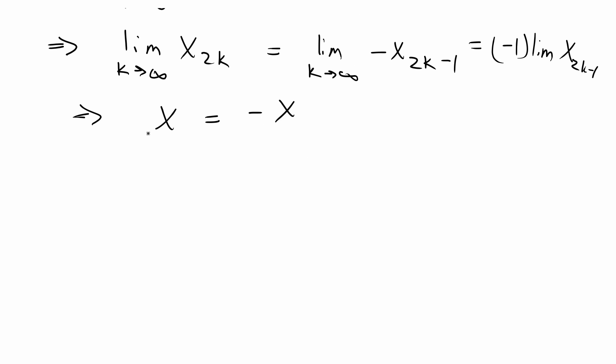Now we have X is equal to negative X. If we bring the negative X to the same side, we have 2X or X plus X, which is equal to 2X, which is equal to 0. If we divide by 2 on both sides, we get 0 divided by 2, which is equal to 0. And thus we have proved that the limit of X_n is equal to X, which is equal to 0. And we are done with this proof.